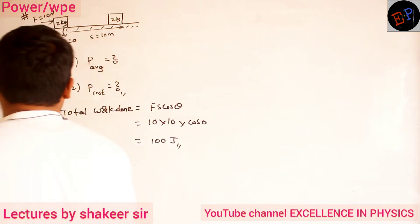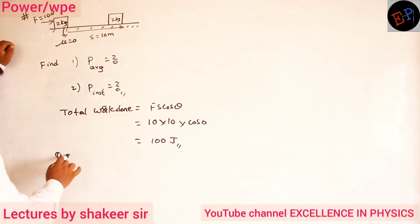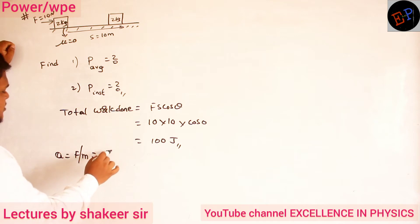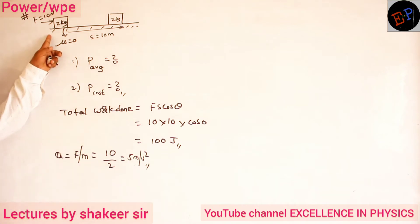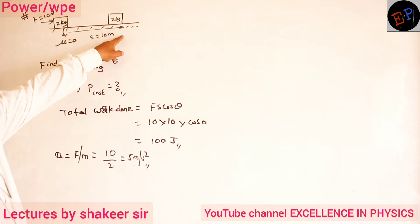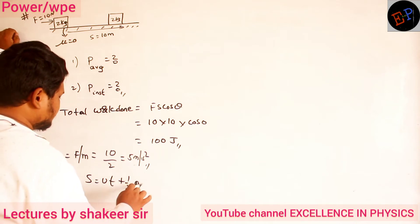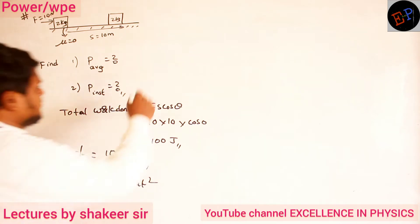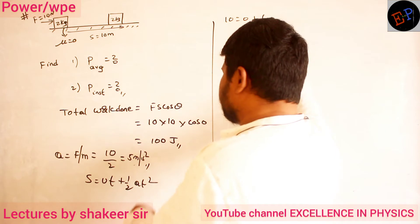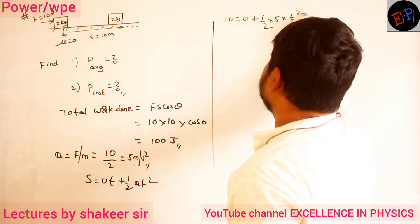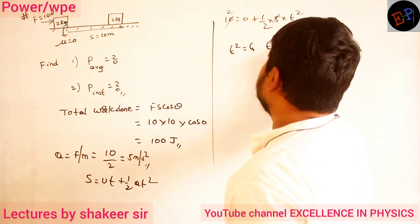Let us calculate the time taken. On a 2 kg body, if I apply a force of 10 N, then acceleration A = F/m = 10/2 = 5 m/s². With this acceleration, I can calculate the time taken to travel 10 meters using S = ut + ½at². Displacement is 10, initial velocity is 0, acceleration is 5. So 10 = ½ × 5 × T², giving T² = 4, so T = 2 seconds.